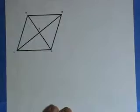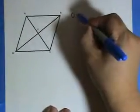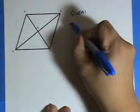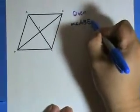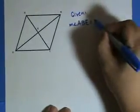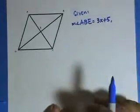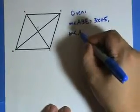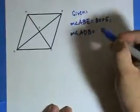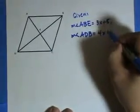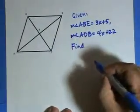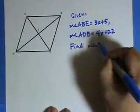The first question we have is... Given... Sorry, my handwriting's so bad. Measure of Angle ABE equals 3x plus 5. Measure of Angle ADB equals 4x plus 22. Find Measure of Angle ACB.